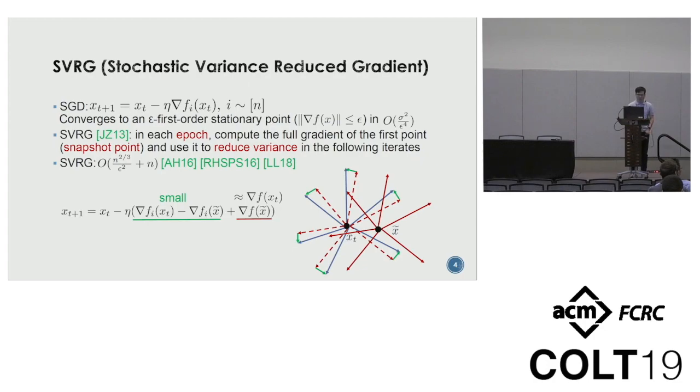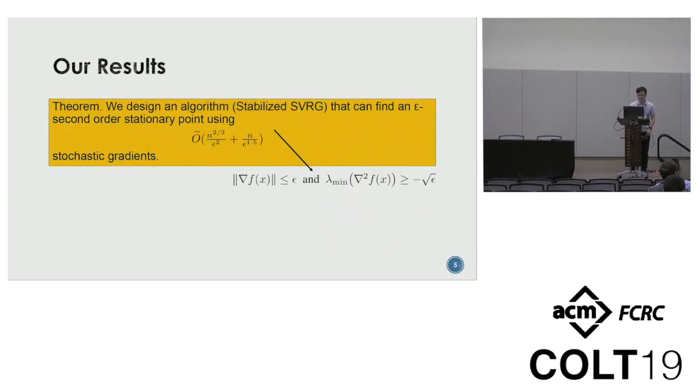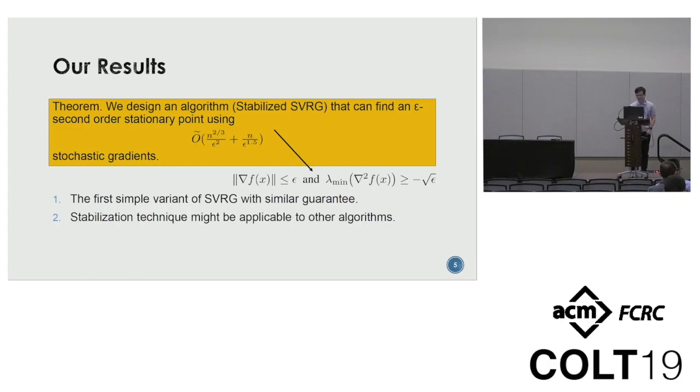We know SVRG can converge to an epsilon first-order stationary point within n to the two-thirds over epsilon squared plus n. The SVRG bound can be much better than the SGD result. The question is: what about the second-order guarantee? In this paper, we give a simple variant of SVRG called Stabilized SVRG and show that this algorithm can find an epsilon second-order stationary point using n to the two-thirds over epsilon squared plus n over epsilon to the 1.5. Here, epsilon second-order stationary point means the gradient norm is upper bounded by epsilon and the smallest eigenvalue of the Hessian is lower bounded by minus square root epsilon. This is the first simple variant of SVRG achieving this guarantee, and our stabilization technique can be applicable to other algorithms.